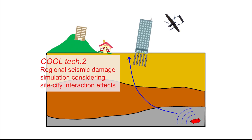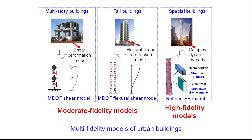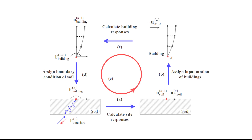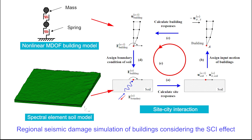Complex terrain and dense buildings may have a significant impact on surface ground motion. As a result, the interaction between the site and the buildings should be properly considered. The buildings can be simulated using both the nonlinear multiple-degree-of-freedom models and the refined finite element models. We further cooperated with the team of Professor Gang Wang from the Hong Kong University of Science and Technology to develop a computer program, using which the soil model of several square kilometers and hundreds of buildings are put together, and the seismic responses are calculated considering the site-city interaction effects.